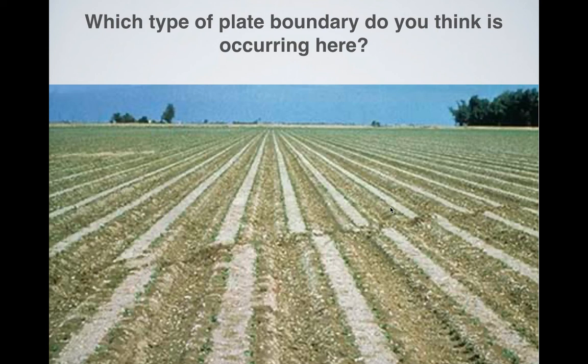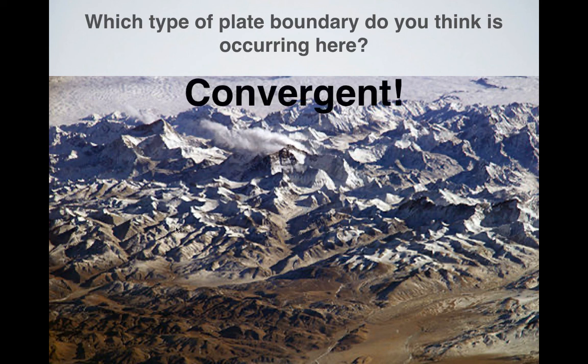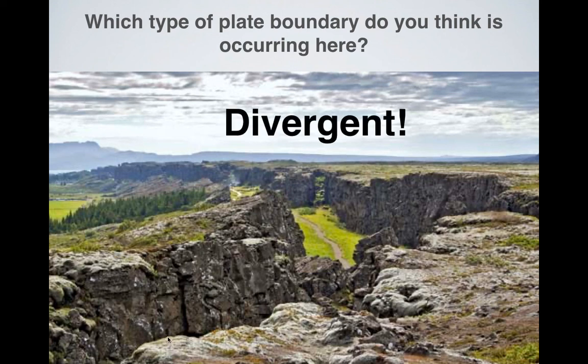So, which type of plate boundary do you think this is? You can see this went down, this went up, so that would be a transform boundary. This one here, beautiful mountains, so that would be convergent. And then this one here, we have a nice rift valley. I think it's in Africa. That would be divergent. All right, so if you have any questions, let me know.